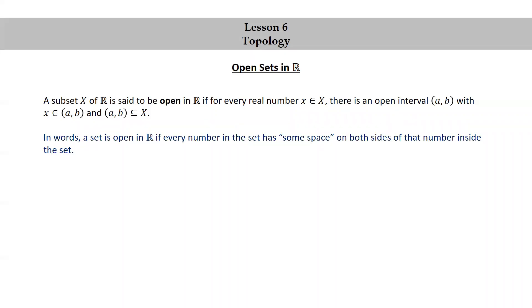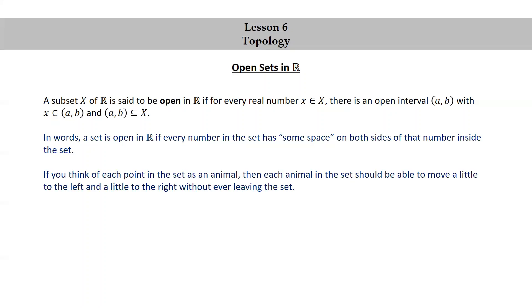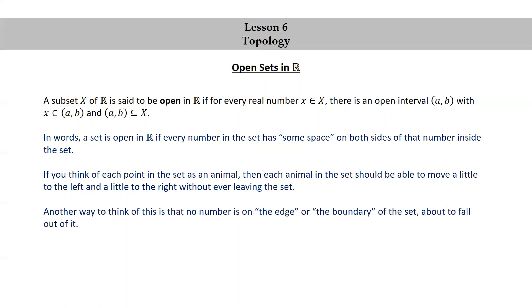In words, a set is open in R if every number in the set has some space on both sides of that number inside the set. If you think of each point in the set as an animal, then each animal in the set should be able to move a little to the left and a little to the right without ever leaving the set. Another way to think of this is that no number is on the edge or the boundary of the set, about to fall out of it.